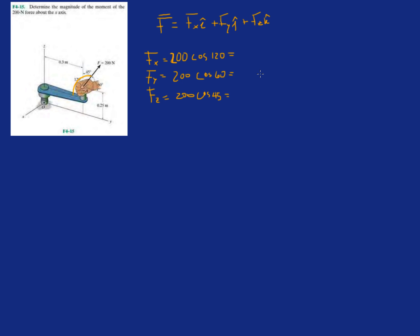200 cosine 120 gives minus 100 Newtons. 200 times cosine 60 gives 100 in the positive direction. And 200 cosine 45 gives 141.4 Newtons. It's pointing up, so positive z. Pointing towards the right of the screen, so that's positive y. And it's pointing into the screen, so it's in the negative x direction. So we already have all the force components: Fx, Fy, Fz.